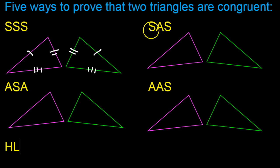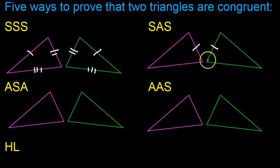Side, angle, side means two sides and the angle in the middle. So for example, if we know that these sides are congruent, and if we know that these sides are congruent — those are the two S's. Now the angle has to be between the two sides, so it would have to be this angle, because it's between the two sides, congruent to this angle. So this would be enough information to know that the triangles are congruent.